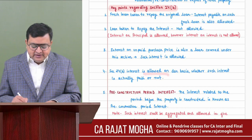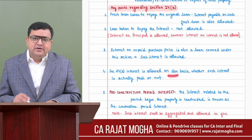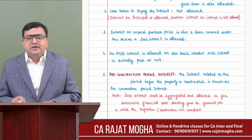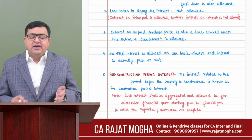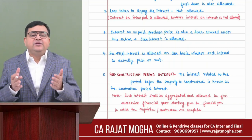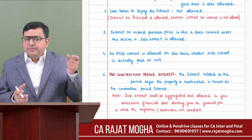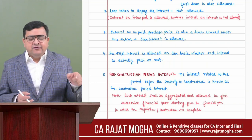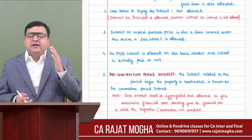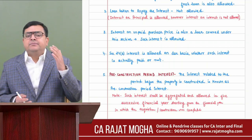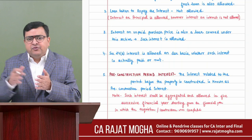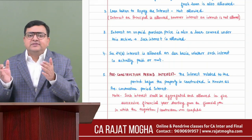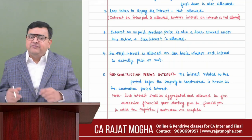Pre-construction period interest is also allowed under Section 24B, and it is allowed in five equal installments. Whatever the pre-construction period interest is, we calculate it, divide by five, and give that deduction starting from the year when the property was constructed, for a total of five years.